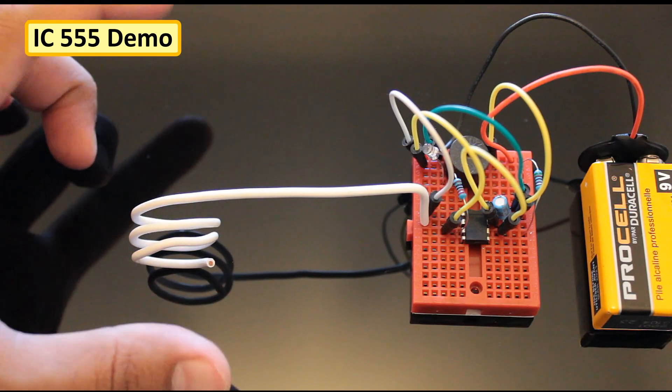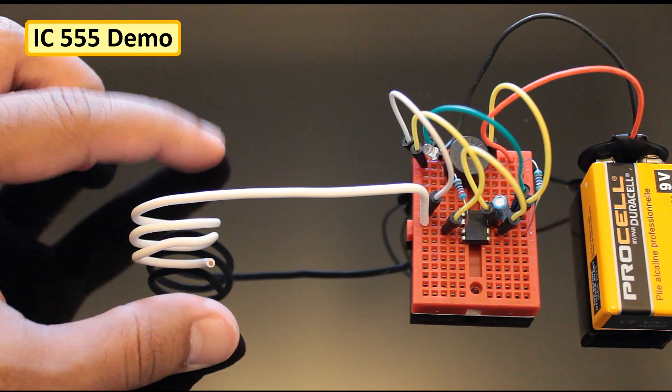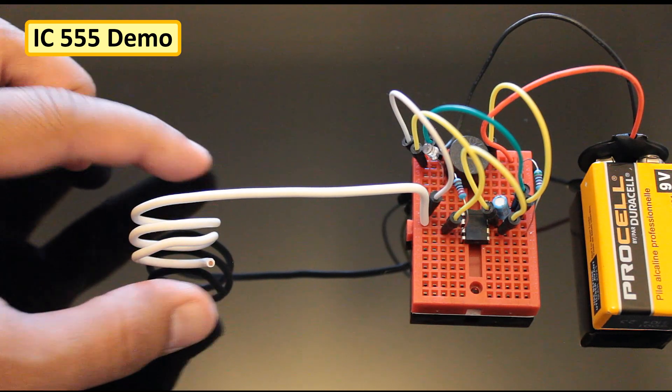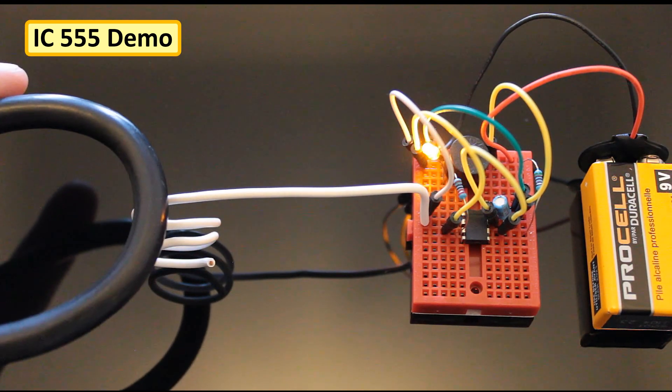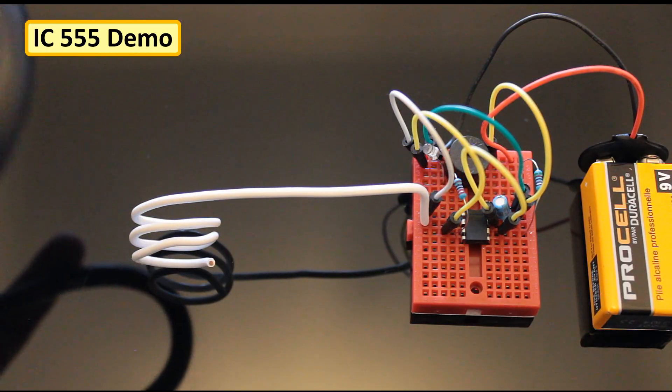As we bring a live wire close to the antenna, the buzzer and the LED starts buzzing and flashing. And if I put my hand around the antenna, it has no effect on the circuit, which makes this setup more reliable as I am not getting any false readings.